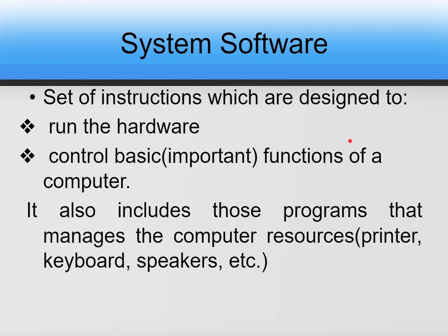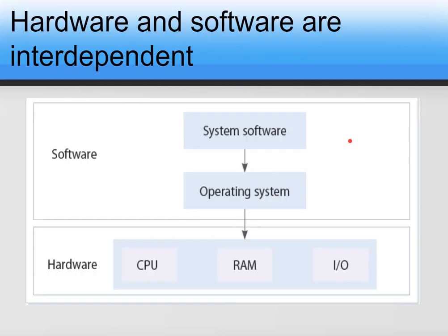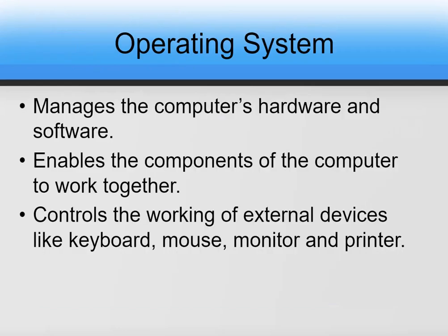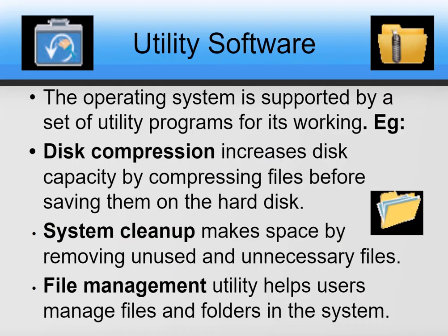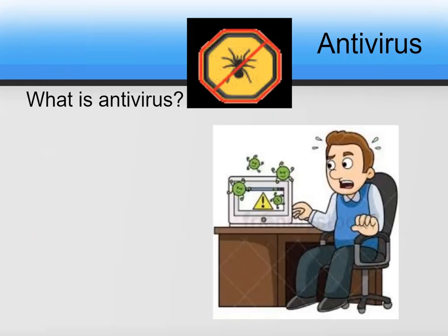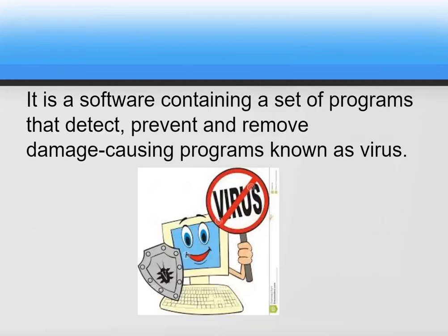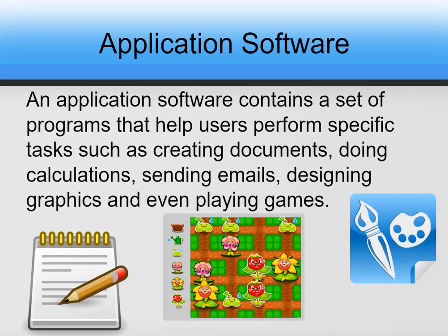We covered system software, the interdependency between hardware and software, operating system examples, utility software, and some utility softwares including antivirus. Now we come to the new topic — application software.